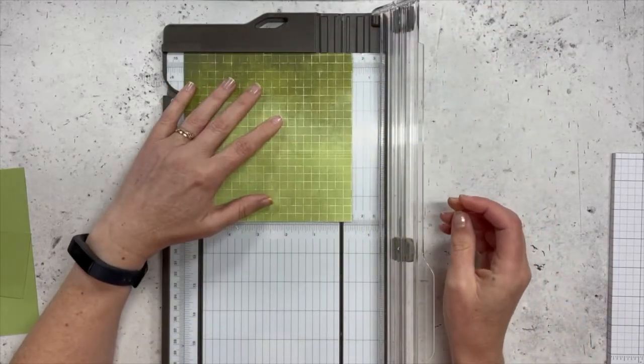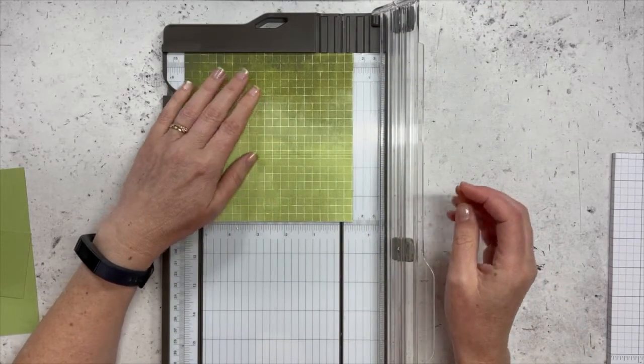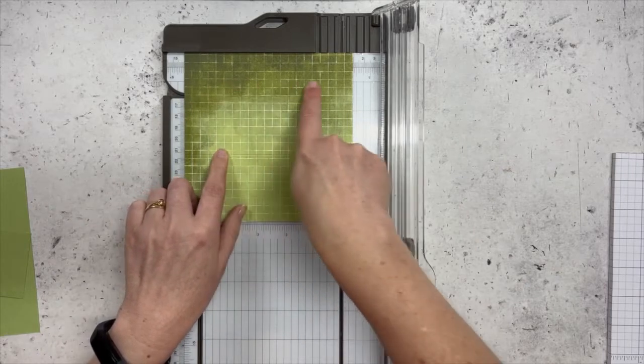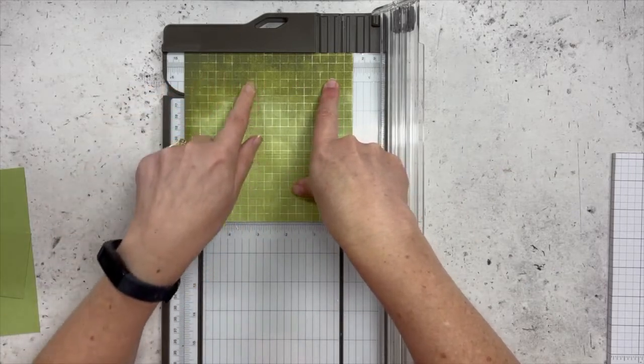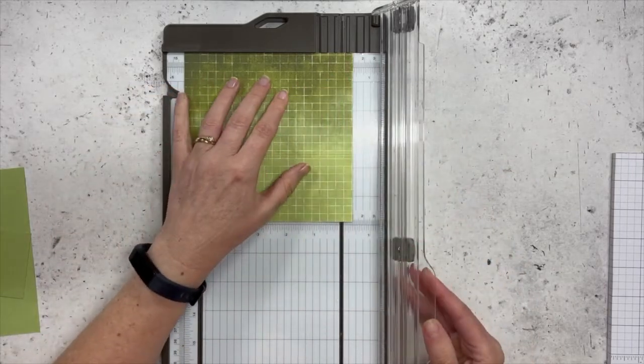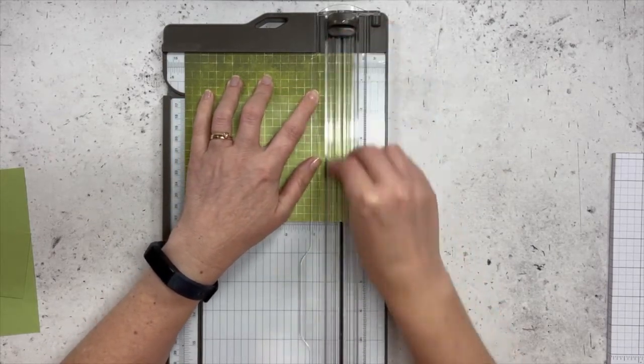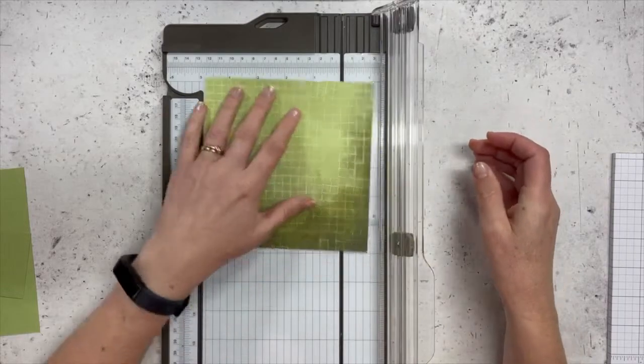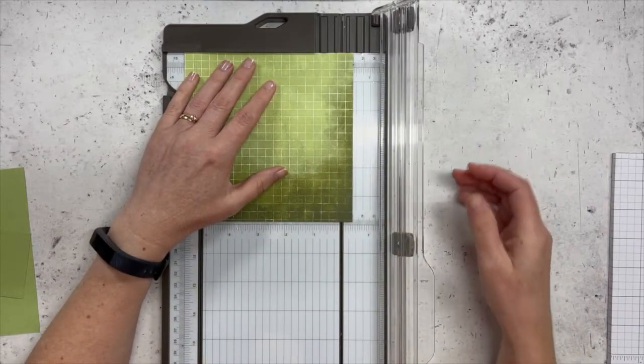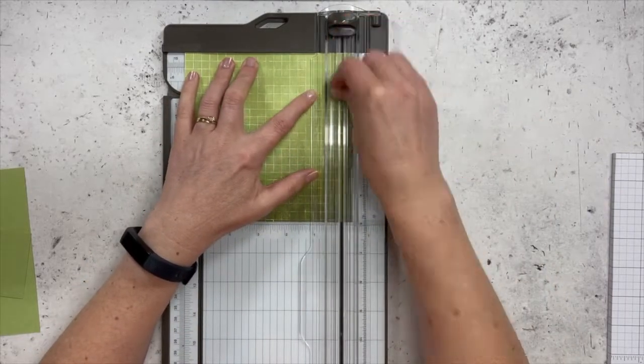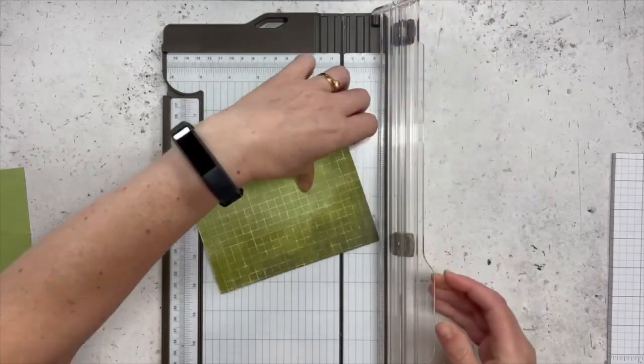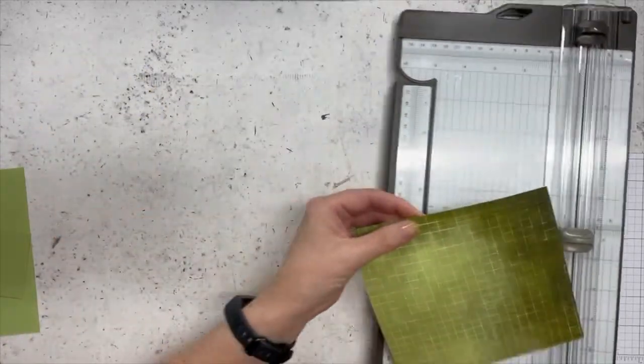This is a super, super easy little pouch. Then we're going to swing around so our score lines, which are really hard to see on this paper actually. I should have chosen a different piece of paper to show you. But we're going to swing around and I'm going to score at 1cm and then swing that around and score on the other side at 1cm. And that's it for the scoring at the moment.